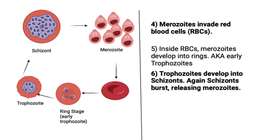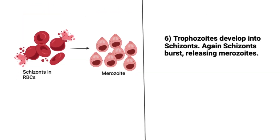From the ring stage, the parasite progresses to a stage known as a trophozoite, or late trophozoite. From the trophozoite stage, the next stage of development is a schizont. Just as it burst out of the liver when it reached the schizont stage, it does the same thing in the red blood cells — emerging again as a merozoite. In this slide you can see the bursting of red blood cells with the subsequent release of the merozoite developmental stage of the parasite.